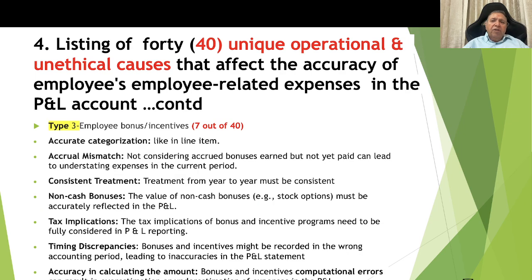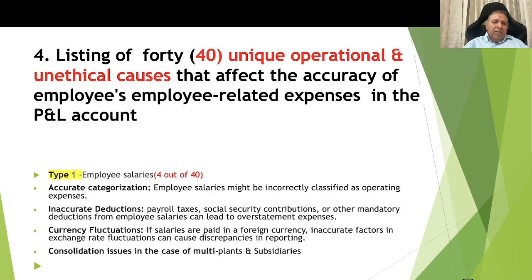Now, listing of 40 unique operational and unethical causes that affect the accuracy of employee-related expenses in the P&L account. Type 1, employee salaries: there are 4 causes out of 40 relevant to employee salaries. One is accurate categorization of employees — salary might be incorrectly classified as operating expenses. Two is inaccurate deductions: payroll taxes, social security contributions, or other mandatory deductions from employee salaries can lead to overstatement of expenses.